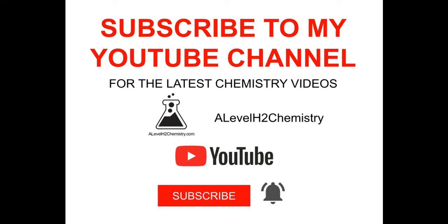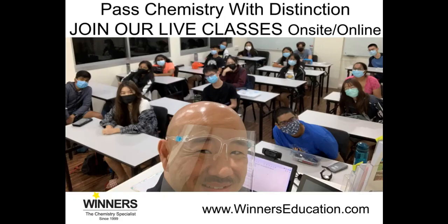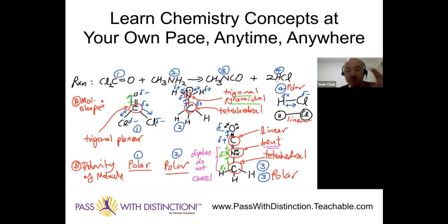If you'd like to catch my latest videos, click the subscribe button right now and click the bell to receive instant notifications. If you'd like to join my live chemistry classes and revision workshops, go to winnerseducation.com to find out how you can score distinction for chemistry on a consistent basis, either in our center or online via Zoom. If you want to check out my online school, go to passwithdistinction.teachable.com. You'll be able to learn chemistry concepts at your own pace, anywhere in the world, topic by topic. This is Sean Chua from Winners Education, to your distinction in chemistry.